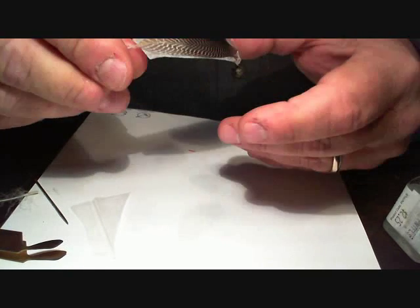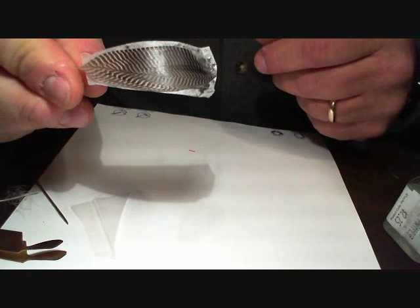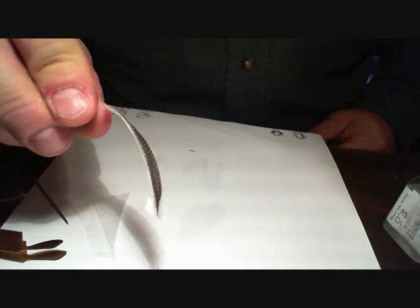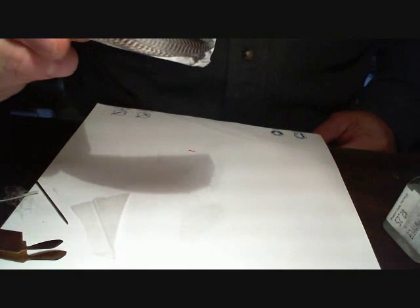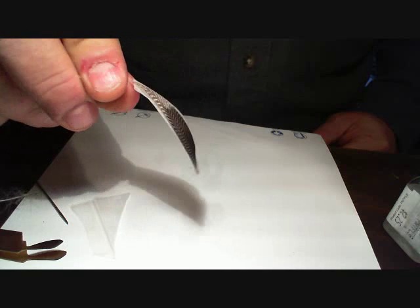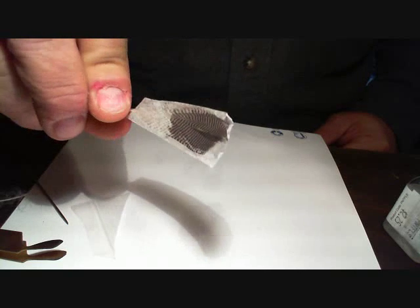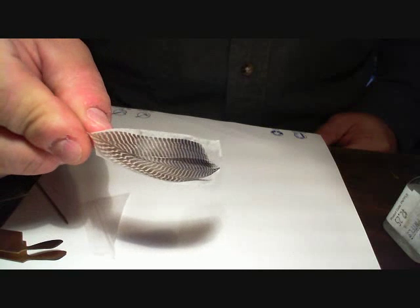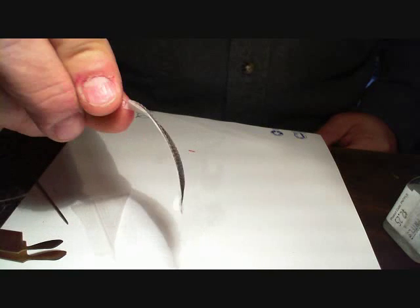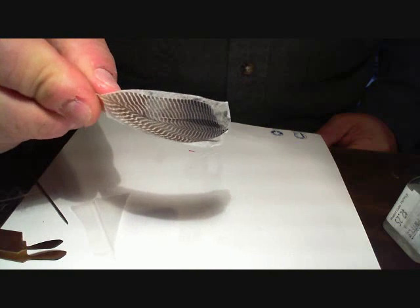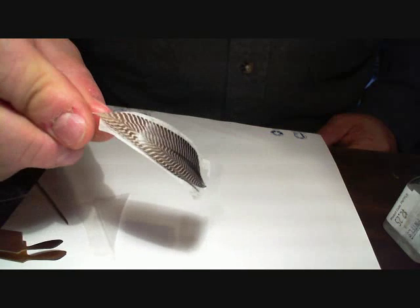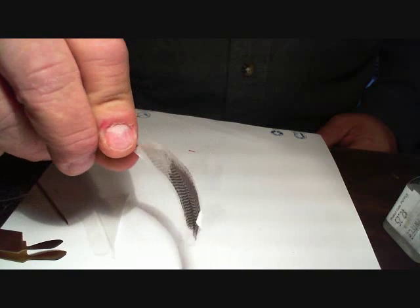You can either lay it aside for drying, or take it up to your fly tying lamp and lay it against the lamp for quicker drying time. It usually takes about three or four minutes by holding it up to the lamp. You want to make sure that feather is completely dry before you put it in the wing burner.